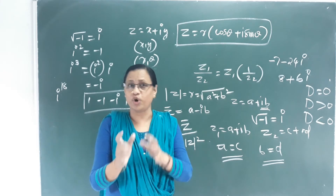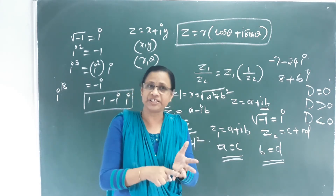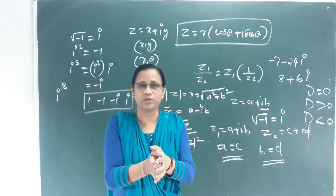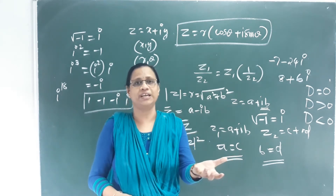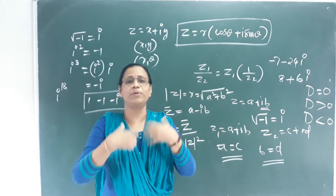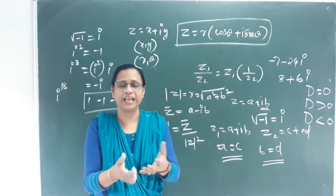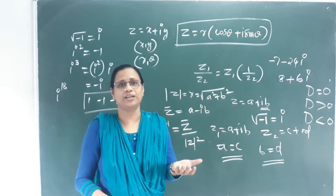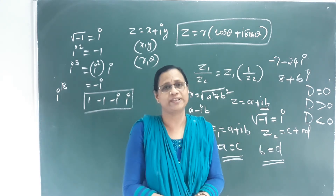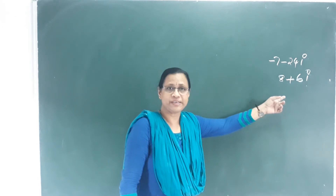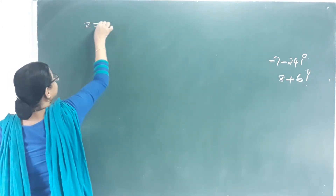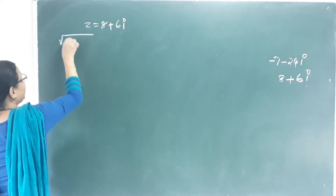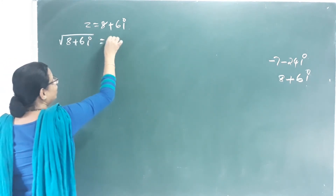The last topic is square root of a complex number. For example, to find √(8 + 6i), we set √(8 + 6i) = x + iy. We will find the values of x and y using this approach.